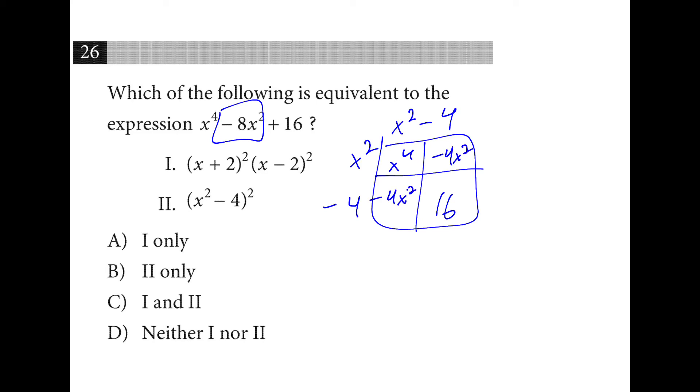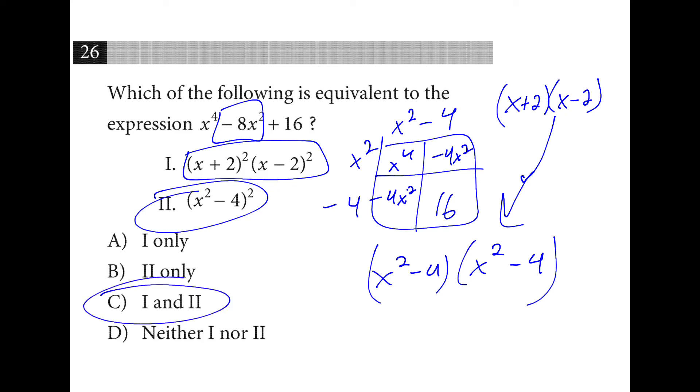So I'm looking at x squared minus four times x squared minus four, which is this. And it turns out, if I take x plus two times x minus two, I get to this. And this has me do that twice. So both of these work. One and two.